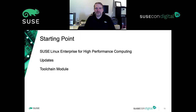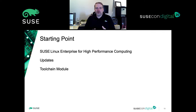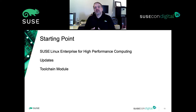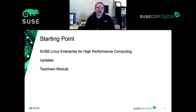The starting point we recommend is SUSE Linux Enterprise for High Performance Computing — a product with optimized libraries and a bunch of HPC tools. Make sure you're keeping it updated. The more current you stay, the more optimizations you pull in. For example, initial mitigations for Spectre and Meltdown had a tremendous performance impact, but that was remediated over time through kernel and firmware updates.